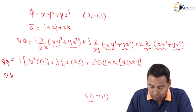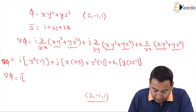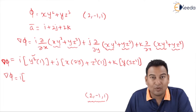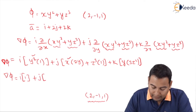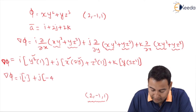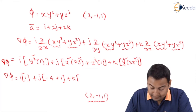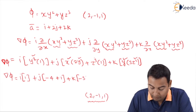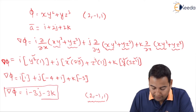Now let's substitute the point (2, −1, 1): x = 2, y = −1, z = 1. The i-component: y² = (−1)² = 1. The j-component: 2xy = 2(2)(−1) = −4, plus z³ = 1, giving −3. The k-component: 3yz² = 3(−1)(1) = −3. So del-phi at the point is i − 3j − 3k.